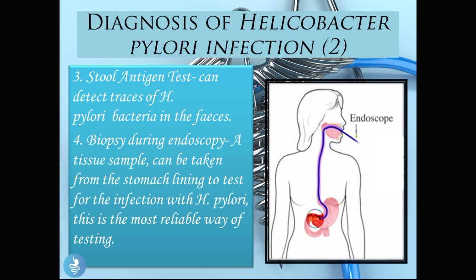The final test we could use is a biopsy during endoscopy. In this procedure, a tissue sample is taken from the stomach lining to test for H. pylori infection. This is actually the most reliable method because it involves direct sampling of the stomach mucosa.